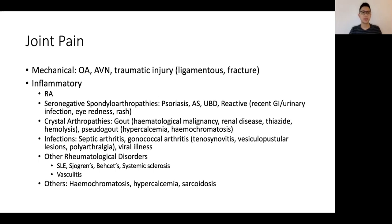Next, we move on to the inflammatory disorders. There are primary arthritides, which would include rheumatoid arthritis as well as the seronegative spondyloarthropathies. RA usually involves predominantly the small joints — the metacarpophalangeal joints and proximal interphalangeal joints — and has a symmetrical distribution and pattern, whereas the seronegative spondyloarthropathies, depending on the subtype, may have different patterns.